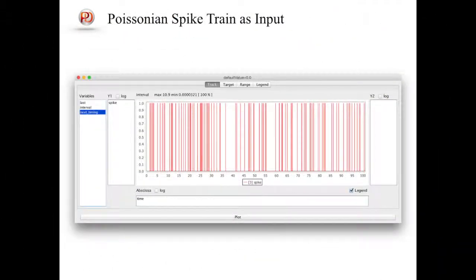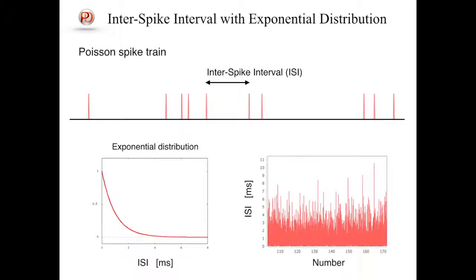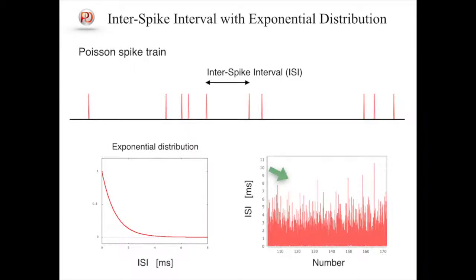In this tutorial we consider a stochastic spike train as the stimulus spikes, especially one which follows the Poisson process, as shown in the slide. In the Poisson spike train, the inter-spike interval follows an exponential distribution. Hence in simulations, intervals following the exponential distribution are generated. An instance of the stochastic inter-spike intervals is shown in the right bottom panel.